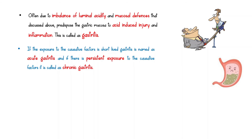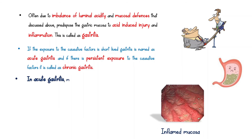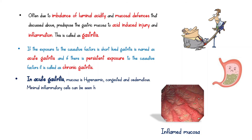In acute gastritis, the mucosa is hyperemic, congested, and edematous. Minimal inflammatory cells can be seen histologically, and it quickly heals by resolution once the injurious agent is removed.